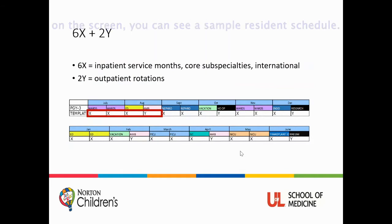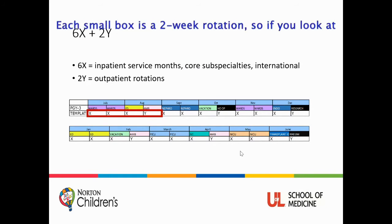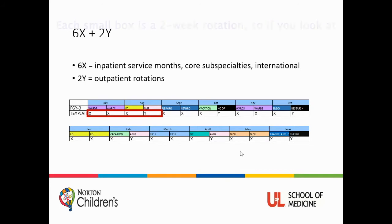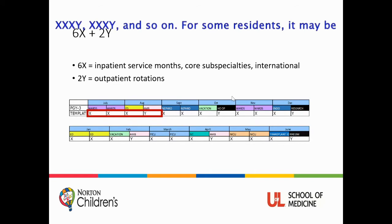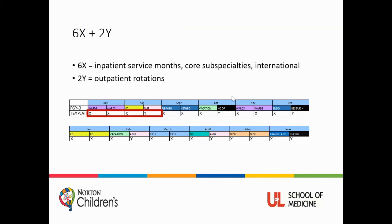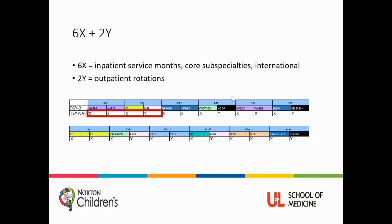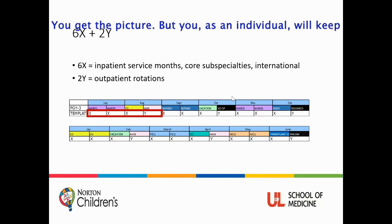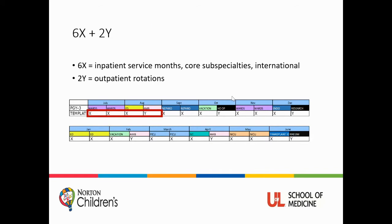If you look here on this screen, you can see a sample resident schedule — a block schedule for the whole year. Each small box is a two-week rotation. You'll see a resident going X, X, X, Y, X, X, X, Y, and so on. For some residents it may be Y, X, X, X, Y, X, X, X — or another variation. But you as an individual will keep the same cadence of rotations throughout your entire year.